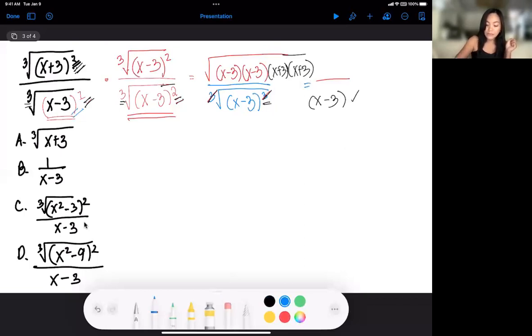That means if you multiply this, so I'll put a cube root again here. If you multiply that, that will actually result to x squared minus 9. So the difference of two squares, x squared minus 9. And if I multiply this, this will result to another x squared minus 9.